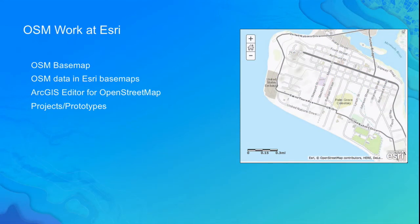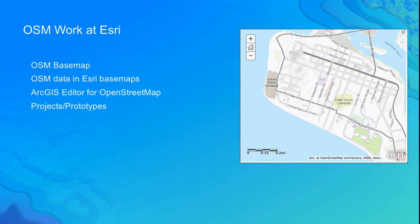So what's Esri doing with OSM? There are a few things we've done for quite some time now. The first is we make the OpenStreetMap basemap available as an option in our basemap gallery in the ArcGIS Online Map Viewer. We're just pulling from their tile servers directly. We also include some OSM data in our own basemap — if you see the credit note saying 'OpenStreetMap contributors,' something in the map you're looking at came from OpenStreetMap. That credit changes based on where you are on the map.